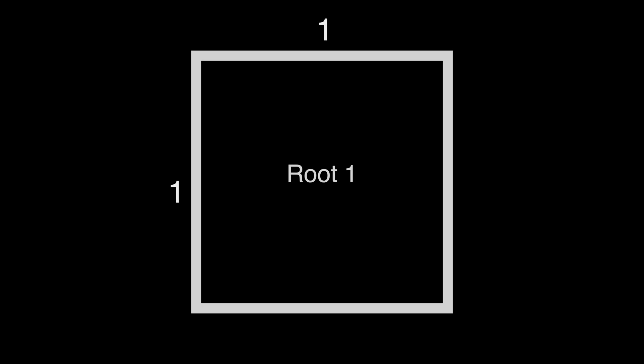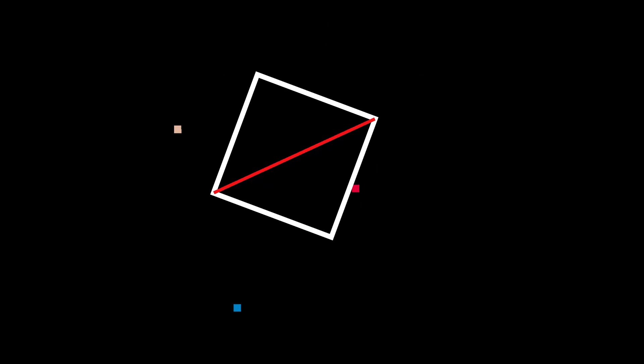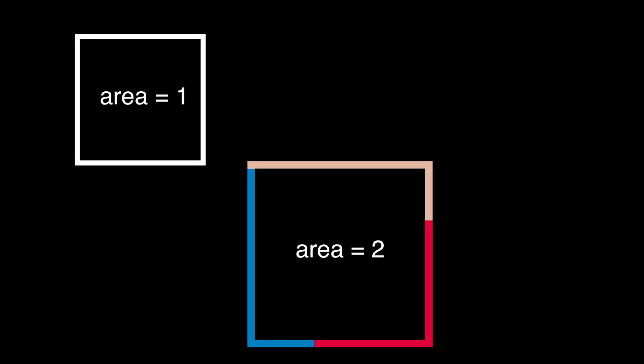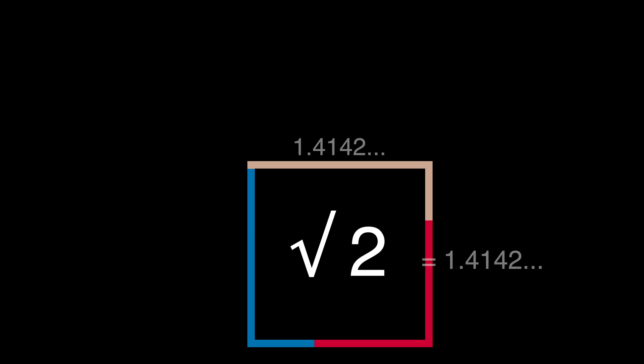It all starts with a square — any size of square. When you draw a diagonal like this and make a square from it, this new square is bigger by one unit in area. The square root of its area, which is 2, is equal to the length of its sides. This is a root 2 square.